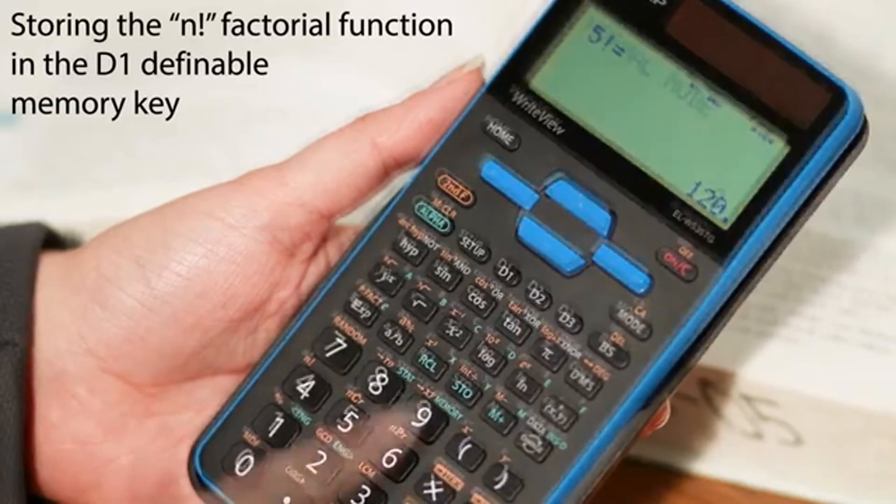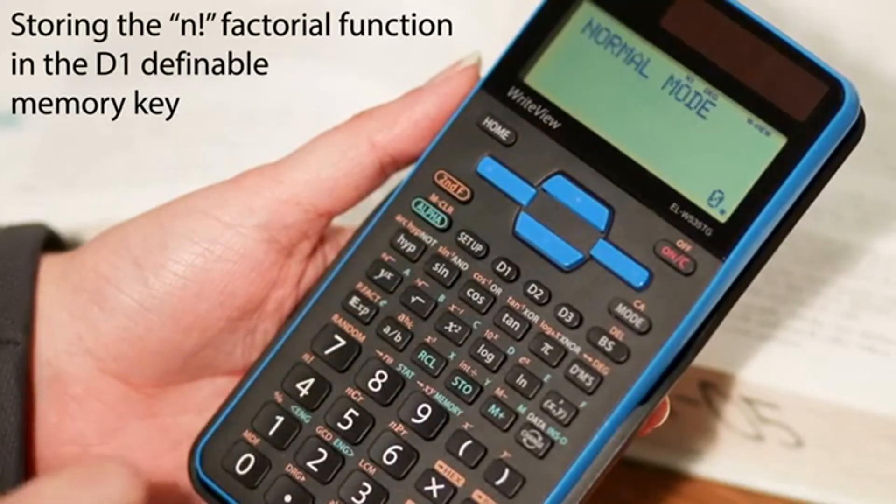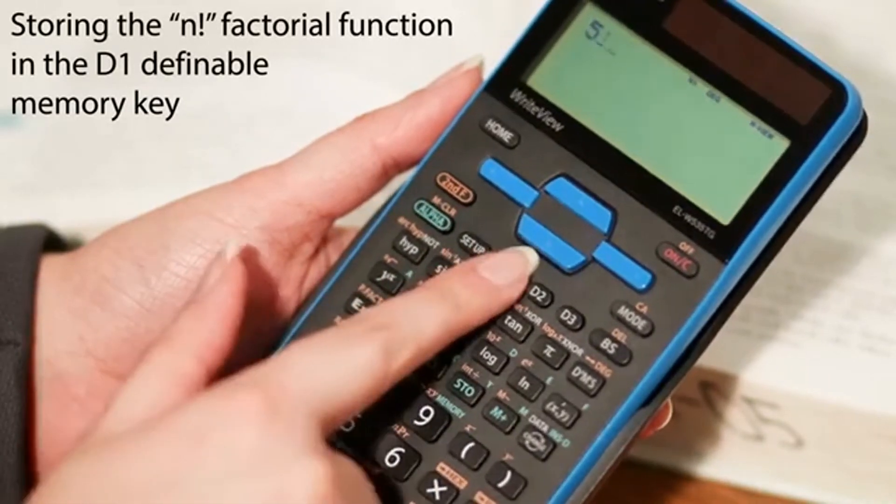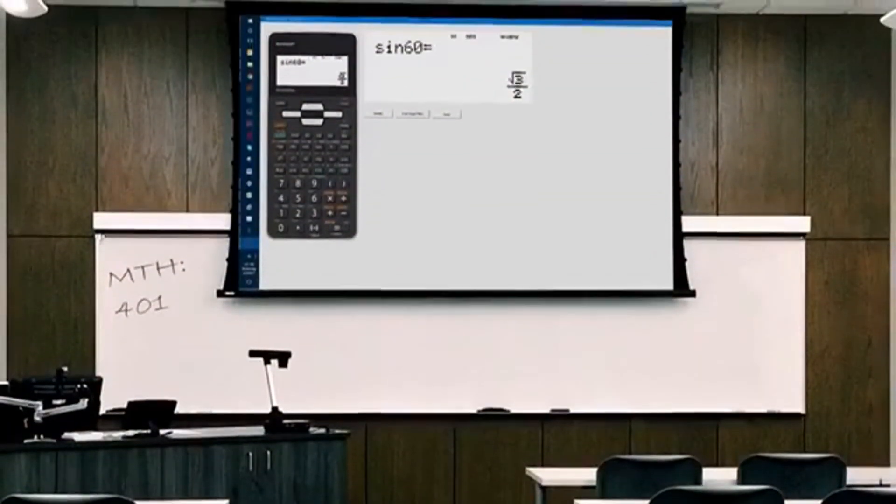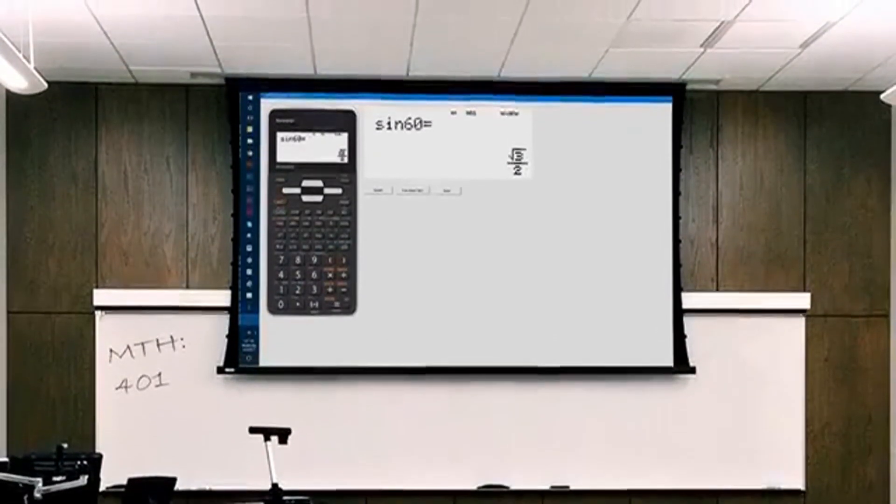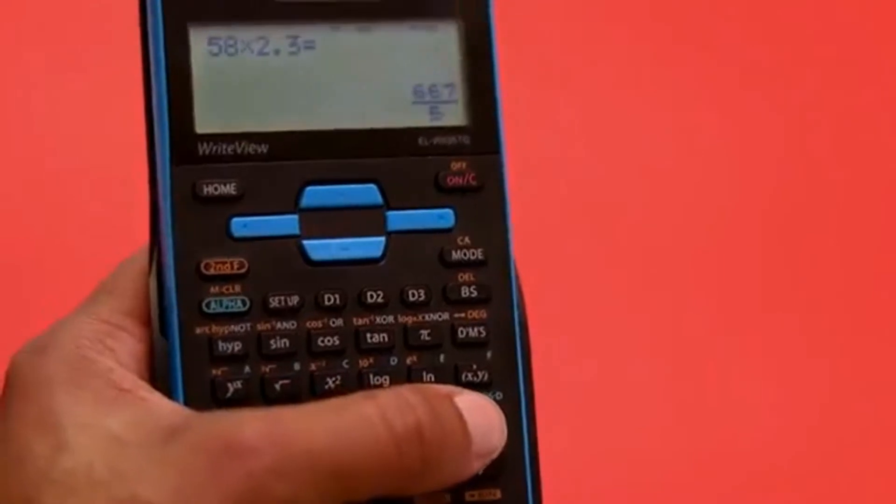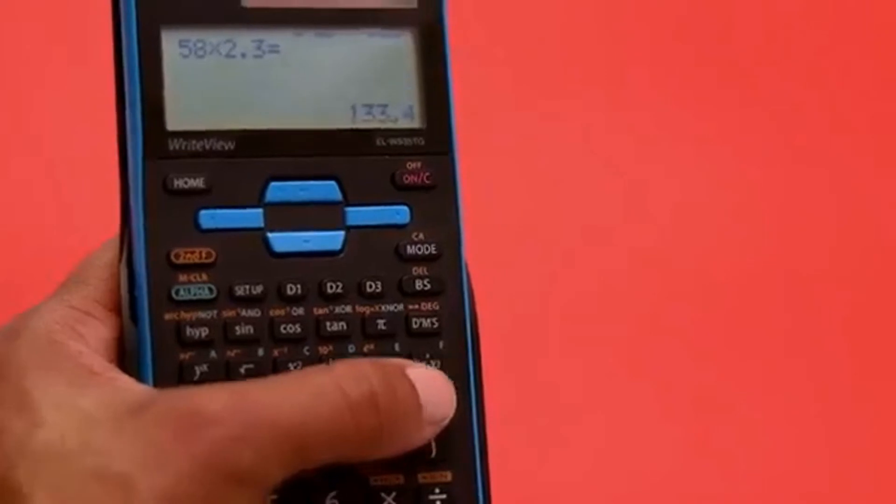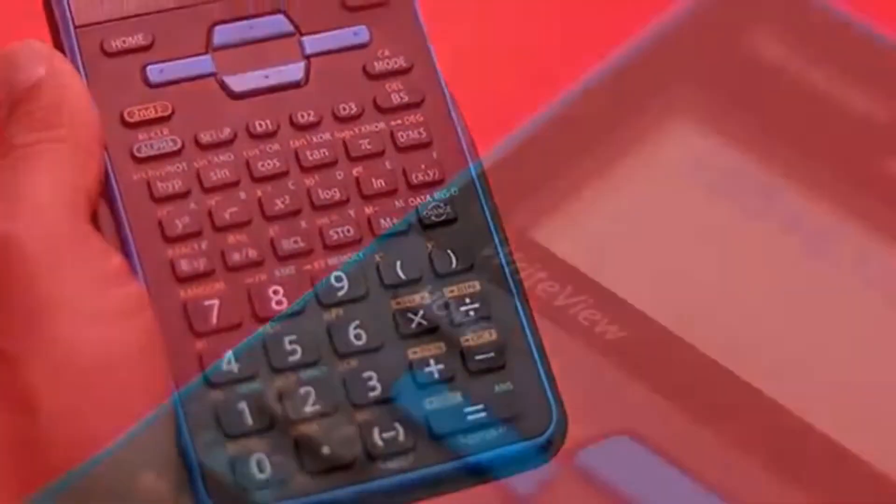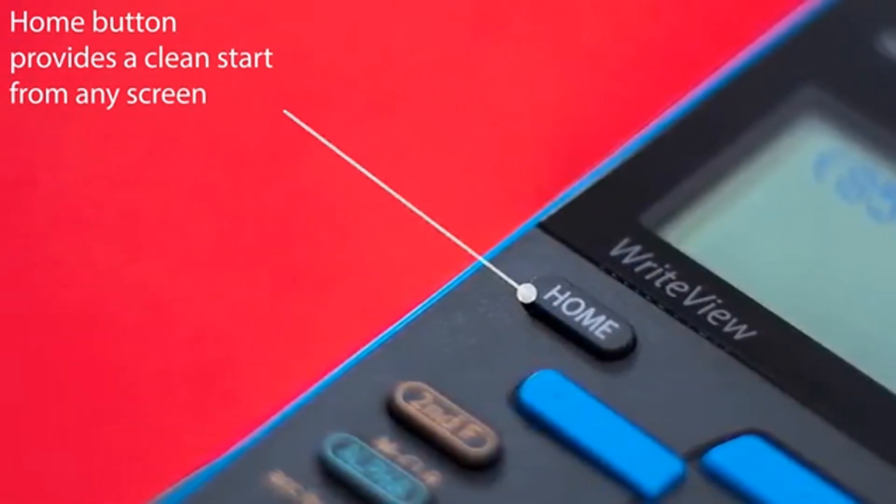Home key allows you to start fresh from any screen. Twin power operation runs on solar energy with a battery backup to provide consistent, reliable performance in any environment. Hard case protects the display and keys for safe storage and transportation. Calculator is permitted for use on SAT and SAT/NMSQT. Calculator also includes independent memory, constant calculation, chain calculation, and more features. Large 16-digit four-line LCD display, WriteView display, 422 functions, eight temporary and three definable memory buttons.